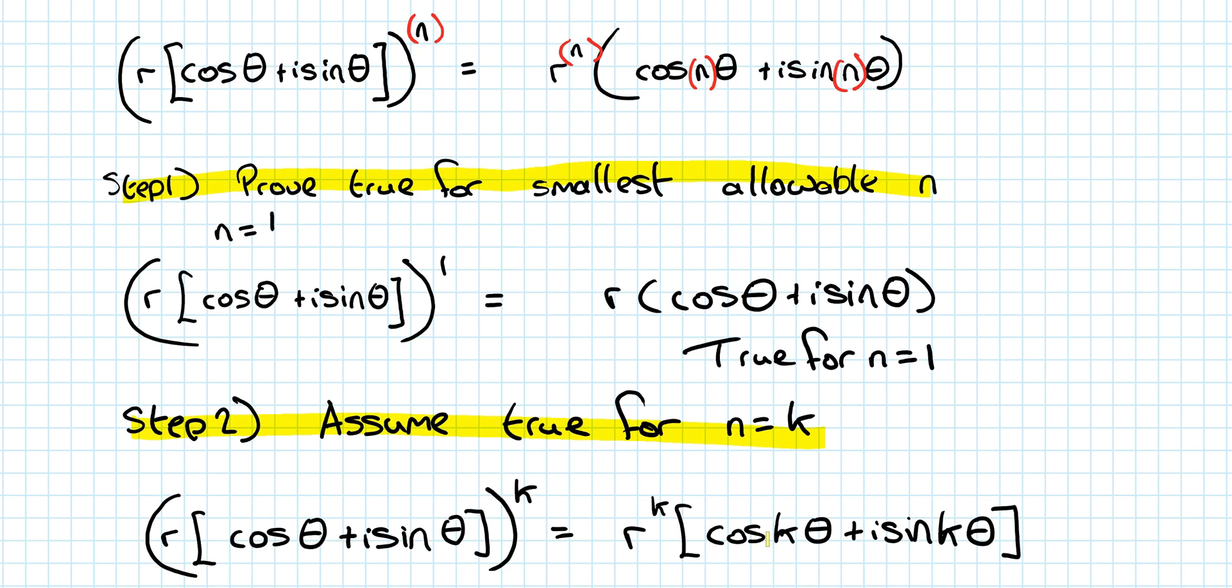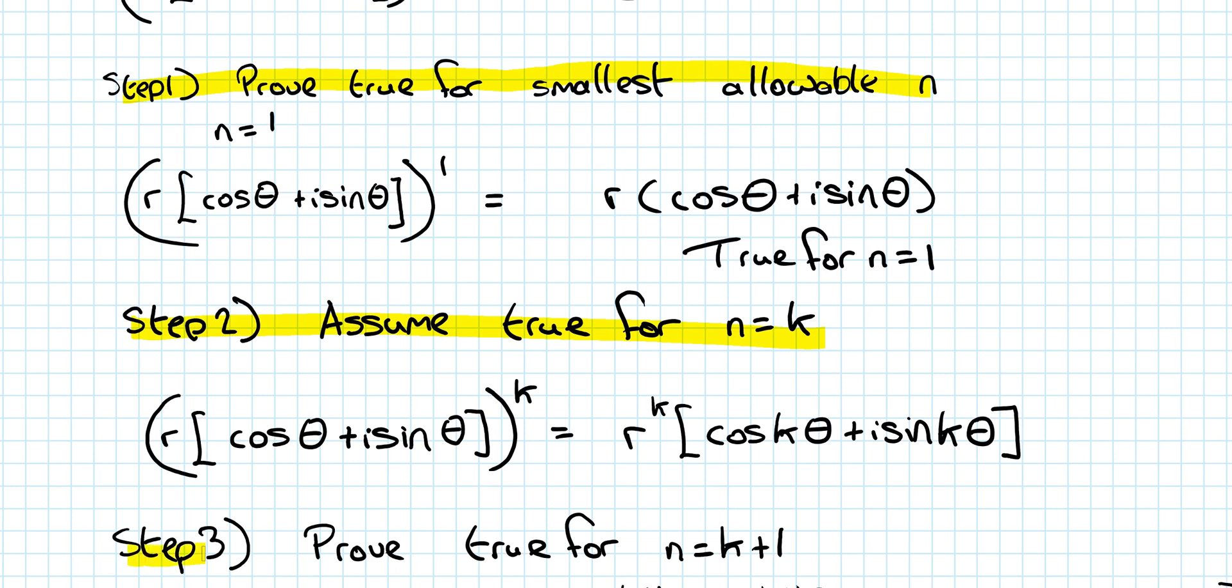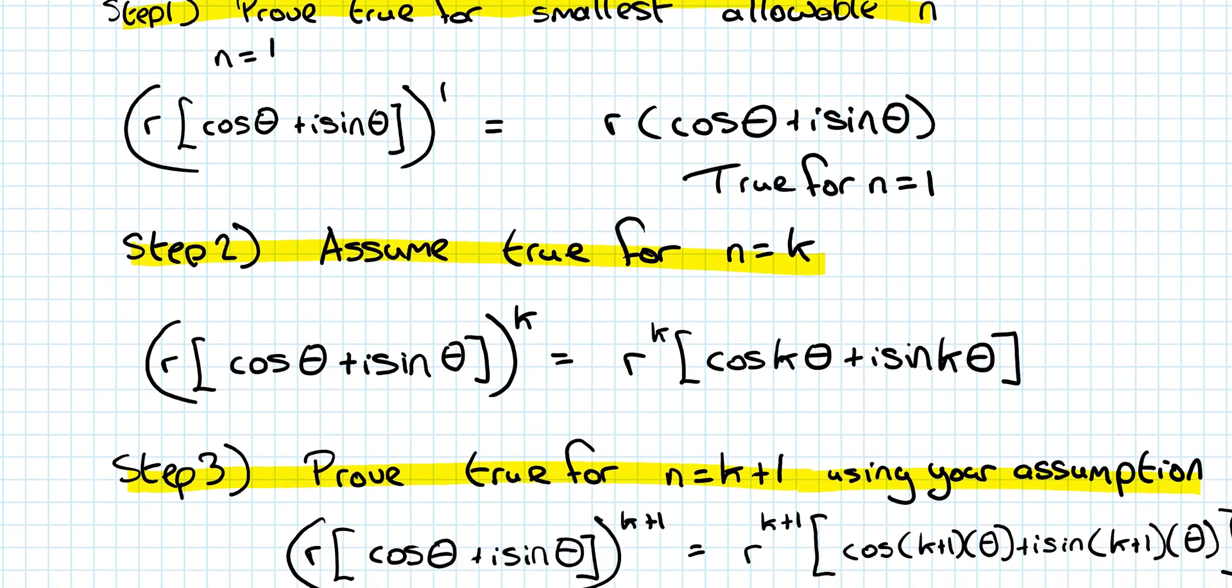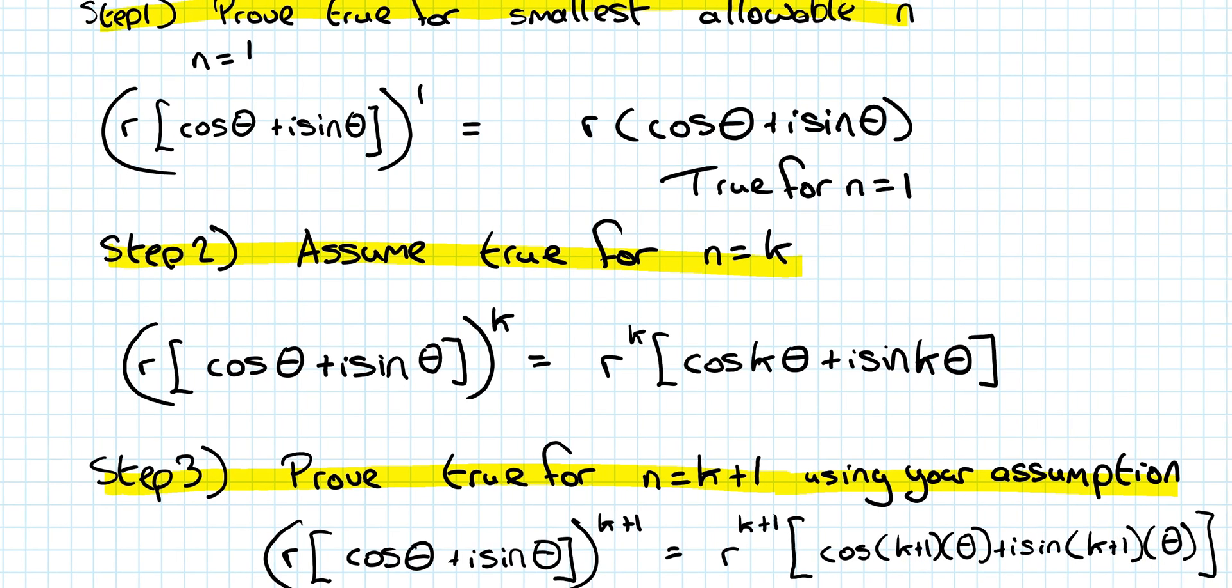So step 3 is to actually perform the actual proof. So step 3 is prove true for n is equal to k plus 1. You might want to write in using your assumption, but it's not the most important thing at the end there, but it is important to write down step 3, prove true for n is equal to k plus 1. So what do we want to actually prove? This is what we want. We want this to be to the power k+1, and this to be multiplied out here, and this to be multiplied out here. So that's how I know I'm right if I get to something like that at the end.